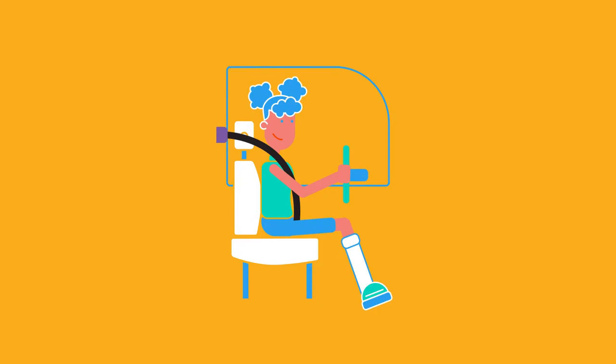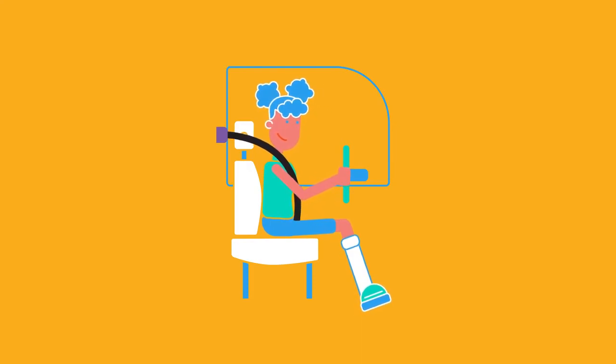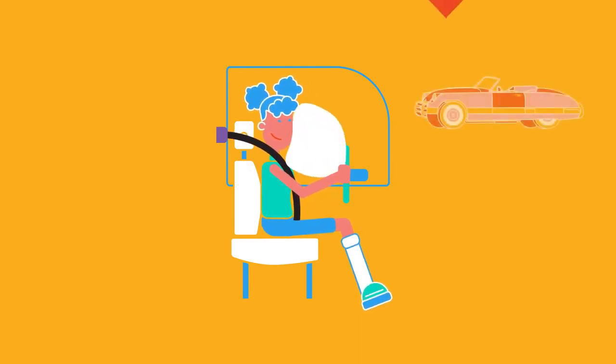A seat belt stops the driver from being thrown from the car and allows a longer time to slow the body down by locking and then stretching during the crash. Seat belts, airbags and crumple zones all reduce the force by increasing the time over which the change takes place.